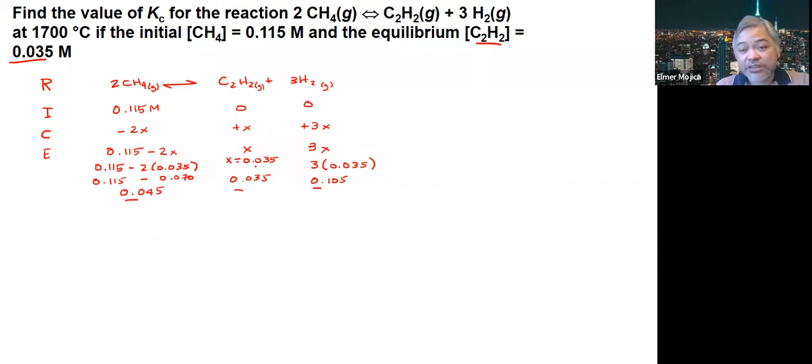Now since the X is given indirectly, the next thing that we're going to do is to find the Kc. The expression here, so you have H2 raised to the 3, times C2H2, divided by CH4 squared.